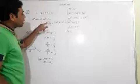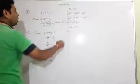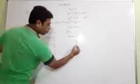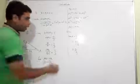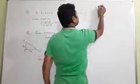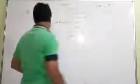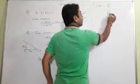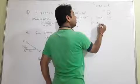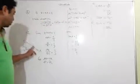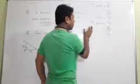Find all required values. Tan A: perpendicular upon base is 3k upon 4k, k and k cancel, tan A is 3 by 4. Cos A: base upon hypotenuse is 4k upon 5k, cos A is 4 by 5. Sin A: perpendicular upon hypotenuse is 3k upon 5k, sin A is 3 by 5. These are only values, not the final answer.